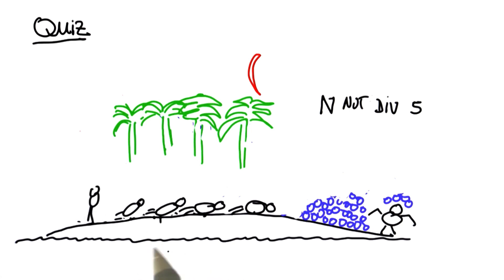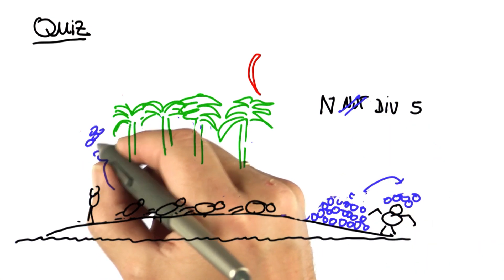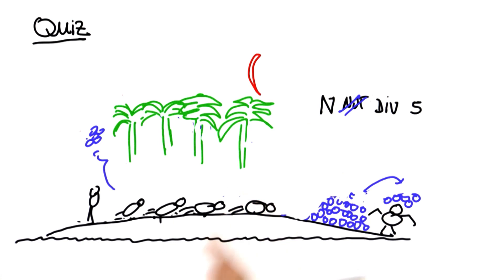And finally the fifth guy wakes up and again the number of coconuts remaining is not divisible by five. But as he gives one to the monkey the remainder becomes divisible by five. So he takes his fifth and hides it in a safe place before he falls asleep again.